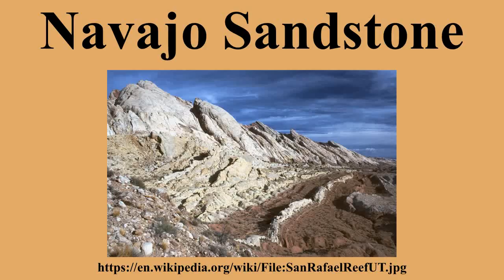The dissolution of the iron coatings by the reducing fluids bleached large volumes of the Navajo Sandstone a brilliant white. Reducing fluids transported the iron in solution until they mixed with oxidizing groundwater. Where the oxidizing and reducing fluids mixed, the iron precipitated within the Navajo Sandstone. Depending on local variations within the permeability, porosity, fracturing, and other inherent rock properties of the sandstone, varying mixtures of hematite, goethite,